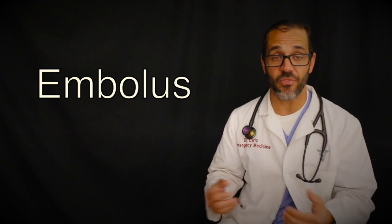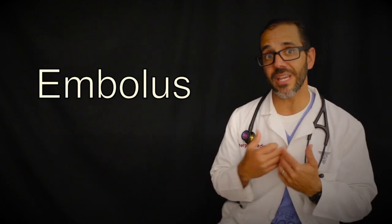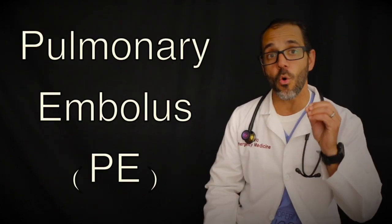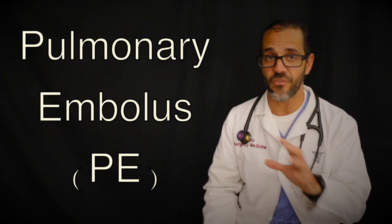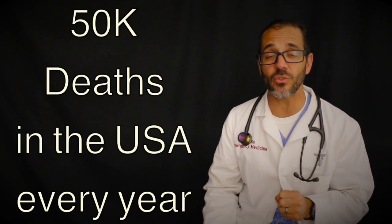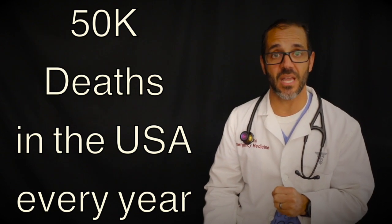If a part or all of the blood clot in the vein breaks off the site where it is formed, it can travel through the venous system and this is called an embolus. If the embolus lodges into the lung it is called a pulmonary embolism or a PE, a very serious condition that can lead to 50,000 deaths a year in the United States.